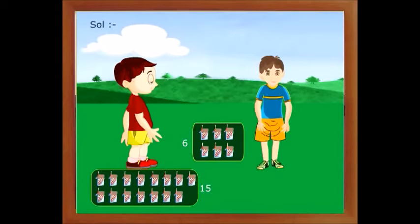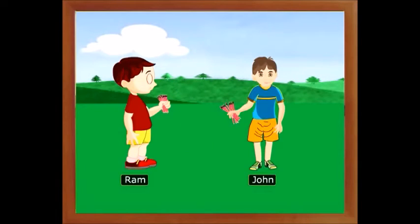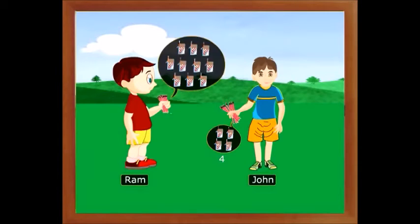Now let us see what happens if Ram and John make packets of three pencils each. John has four packets and Ram has ten packets. Therefore the equivalent ratio is 4 is to 10.